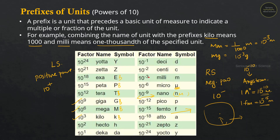Beyond these, we also have 10 raised to minus 18 (atto), 10 raised to minus 21 (zepto), and 10 raised to minus 24 (yocto). All positive power prefix values are added on one side, and negative powers extend down to 10 raised to minus 15 and beyond.